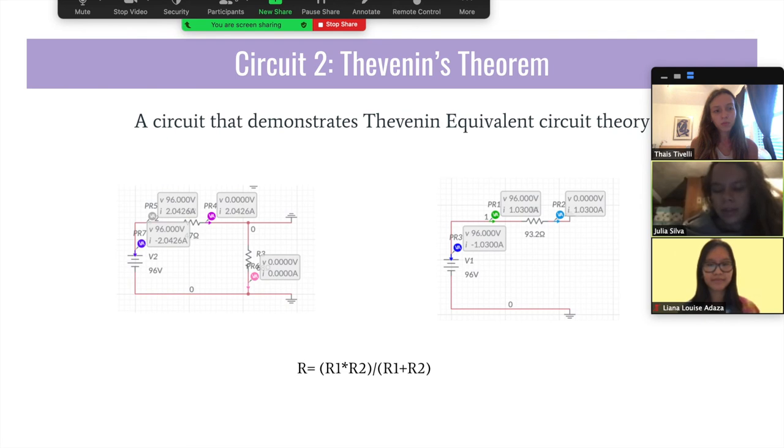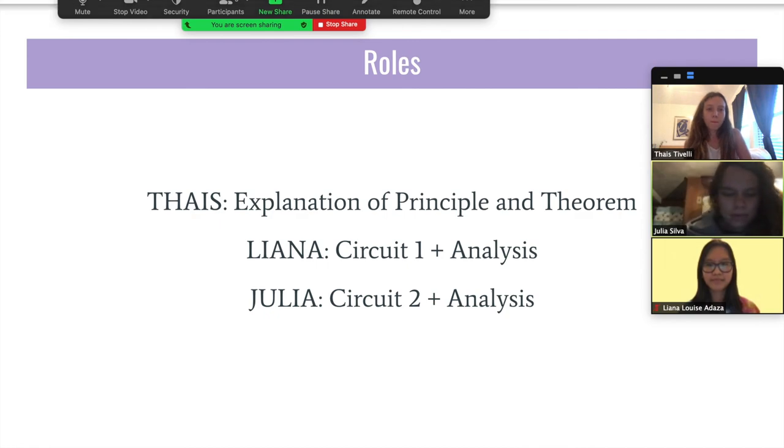In order to get the resistance of the resistor in the second circuit, you have to use the equation below, which is R1 times R2 divided by R1 plus R2. That's how I got the 93.2 ohms in the second resistor. And that is the Thevenin's theorem. It's just the simplified version of the original circuit.